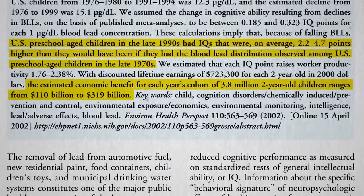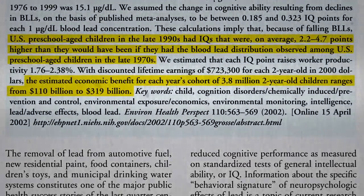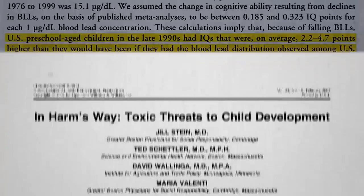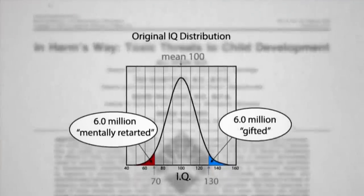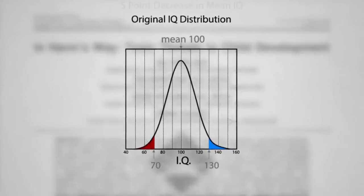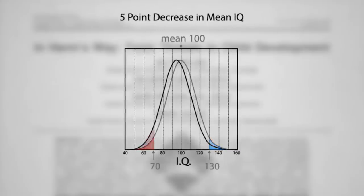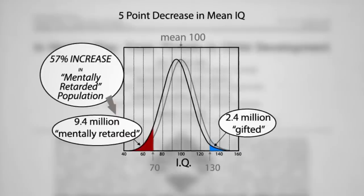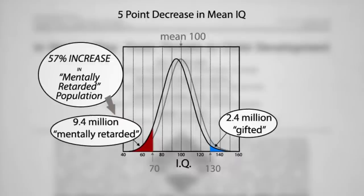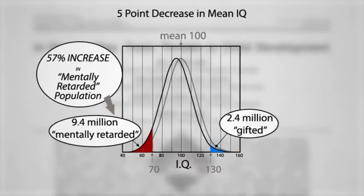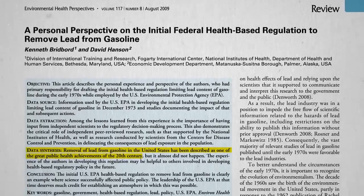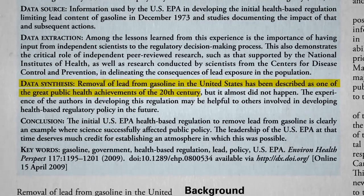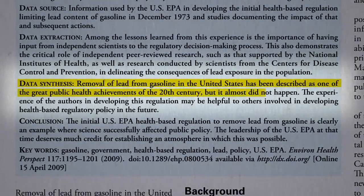What that means for the country is potentially hundreds of billions of dollars of improved productivity. Even a small shift in average IQ could result in a 50% increase in the number of so-called mentally retarded — millions more in need of special education and services. So the removal of lead from gasoline in the United States may be one of the great public health achievements of the 20th century, but it almost did not happen.